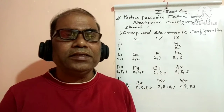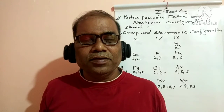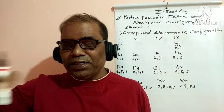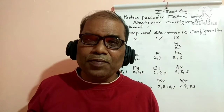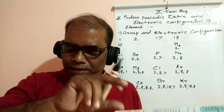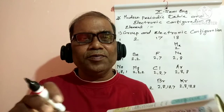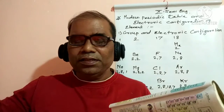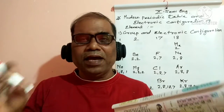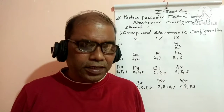The structure has 18 vertical columns and 7 horizontal rows. The vertical column is called a group, and the horizontal row is called a period. So there are 18 groups and 7 periods in the modern periodic table.